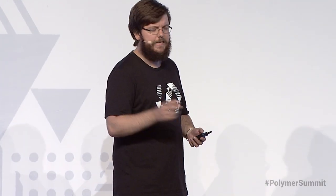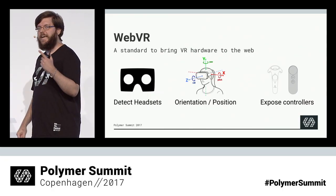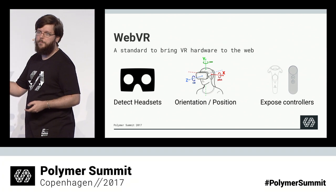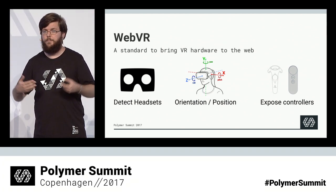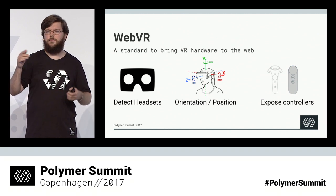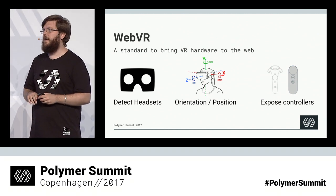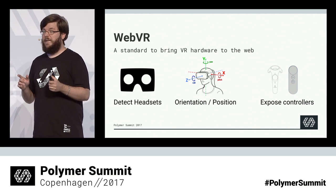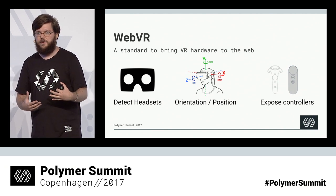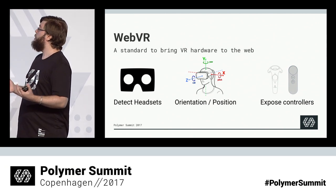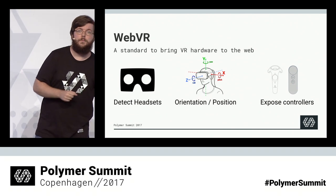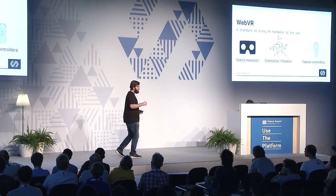WebVR basically gives us three things. First, it detects if there is VR hardware available — and that might be a phone with a Daydream or Cardboard device. It gives you parameters like how to distort everything and all that. Then it gives you information you really need, because we are putting the user front and center. Whenever the user turns their head, we have to take that into account for our camera — the camera has to move. The same if I move around in the room, I have to update my camera. So it gives us this kind of information as well, called the pose.